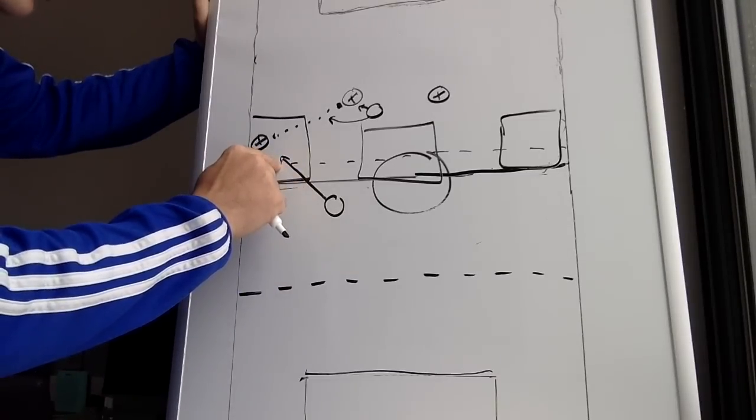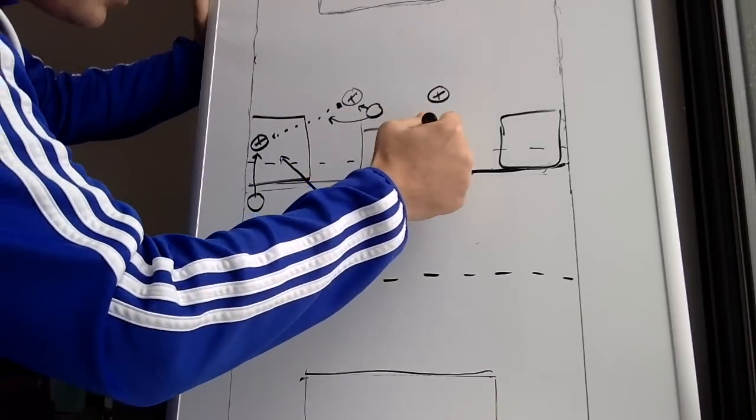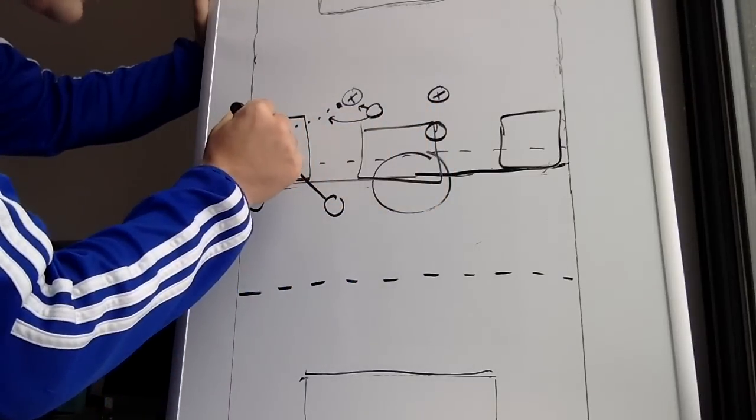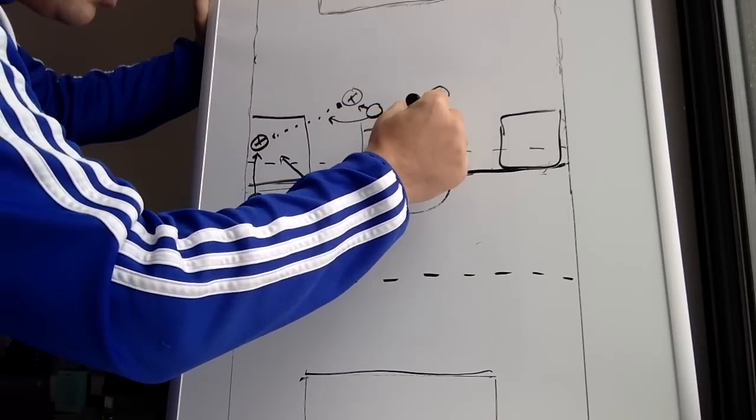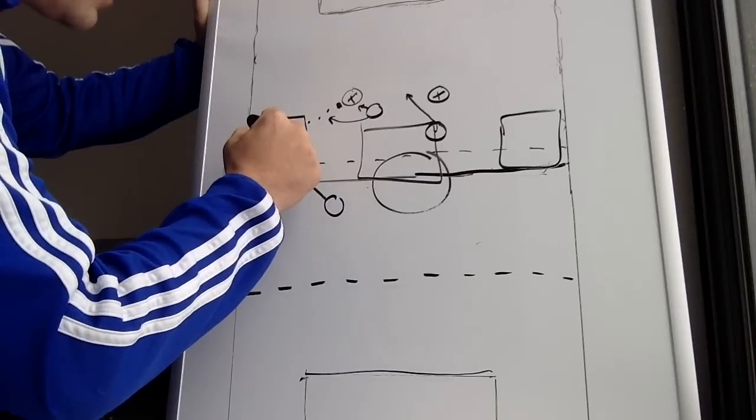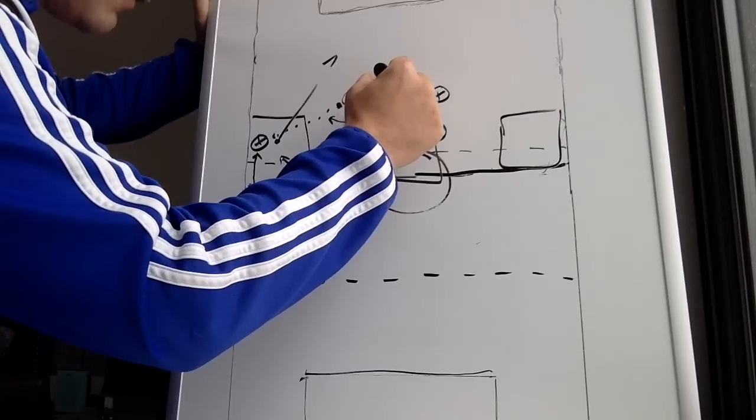This midfielder is coming in strong. At this point, our other forward, we're anticipating a turnover in this area. Our other forward will probably make a penetrating run. If we get a turnover, boom, straight away, we look to counter.